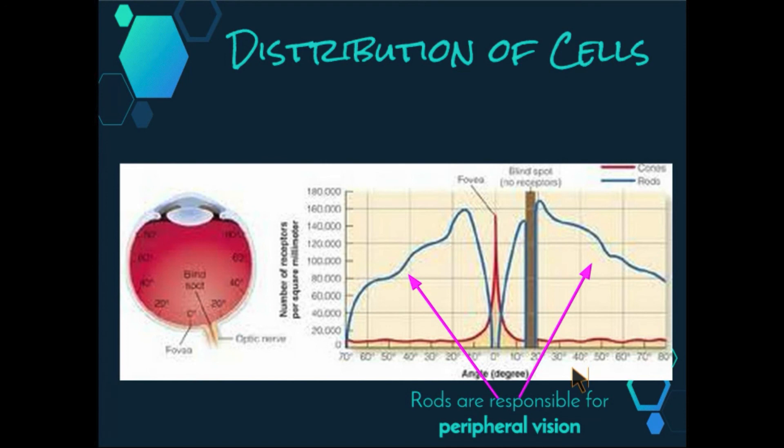Cones, on the other hand, which are represented by the red line, are distributed in groups throughout the retina, but there are fewer found in the periphery, as we can see. Most of our cones are concentrated in the macula, which would be this section here, an area of the retina that gives a central 10 degrees of vision. The fovea is a small pit in the middle of the macula that contains cones only.